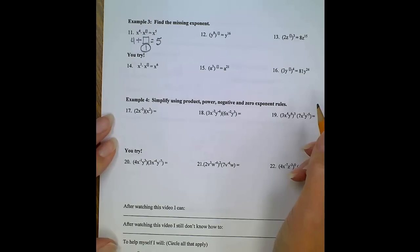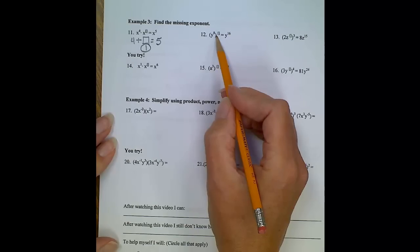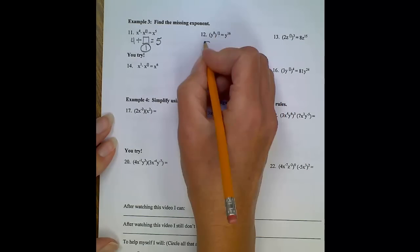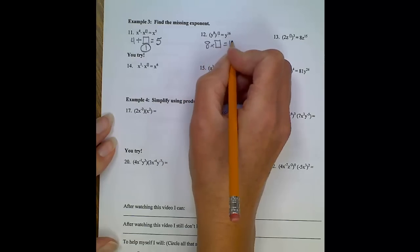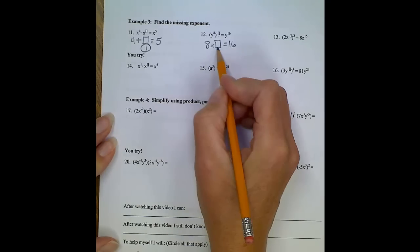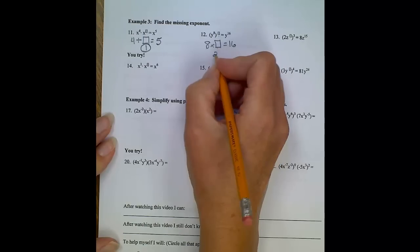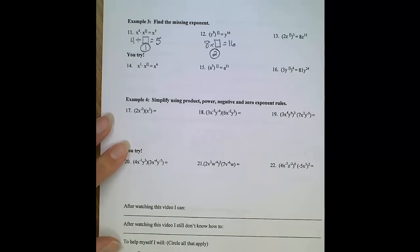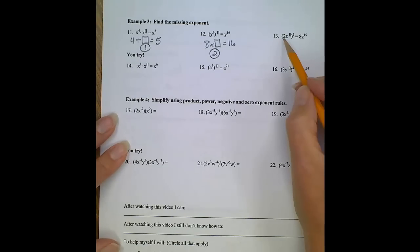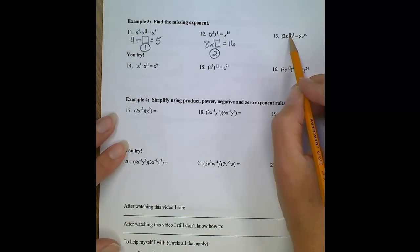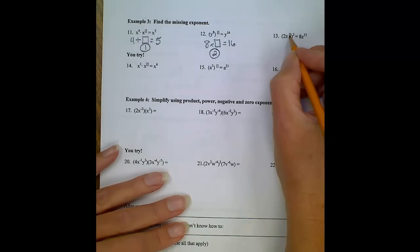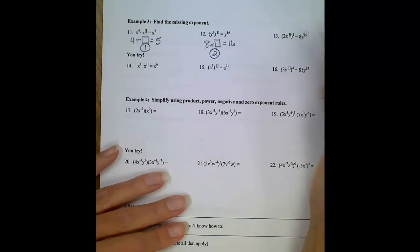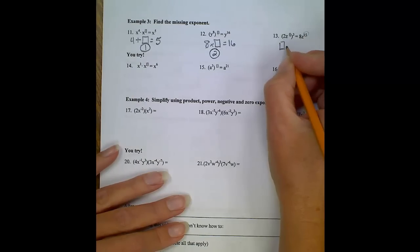Number 12. We have a power to a power. When we have a power to a power, remember, we multiply those exponents together. So 8 times some random number equals 16. To find our random number, we do 16 divided by 8, and we'll get that our answer should be 2. Number 13. Oh, boy, we have two terms in here, but only the z is raised to the blank power. 2 raised to the third power would give us 8. That's already been addressed. But z to the blank power raised to the third power is somehow going to equal 15. So our quick equation would be some blank missing number times 3 equals 15. Missing number, therefore, would be 15 divided by 3. Answer would be 5.